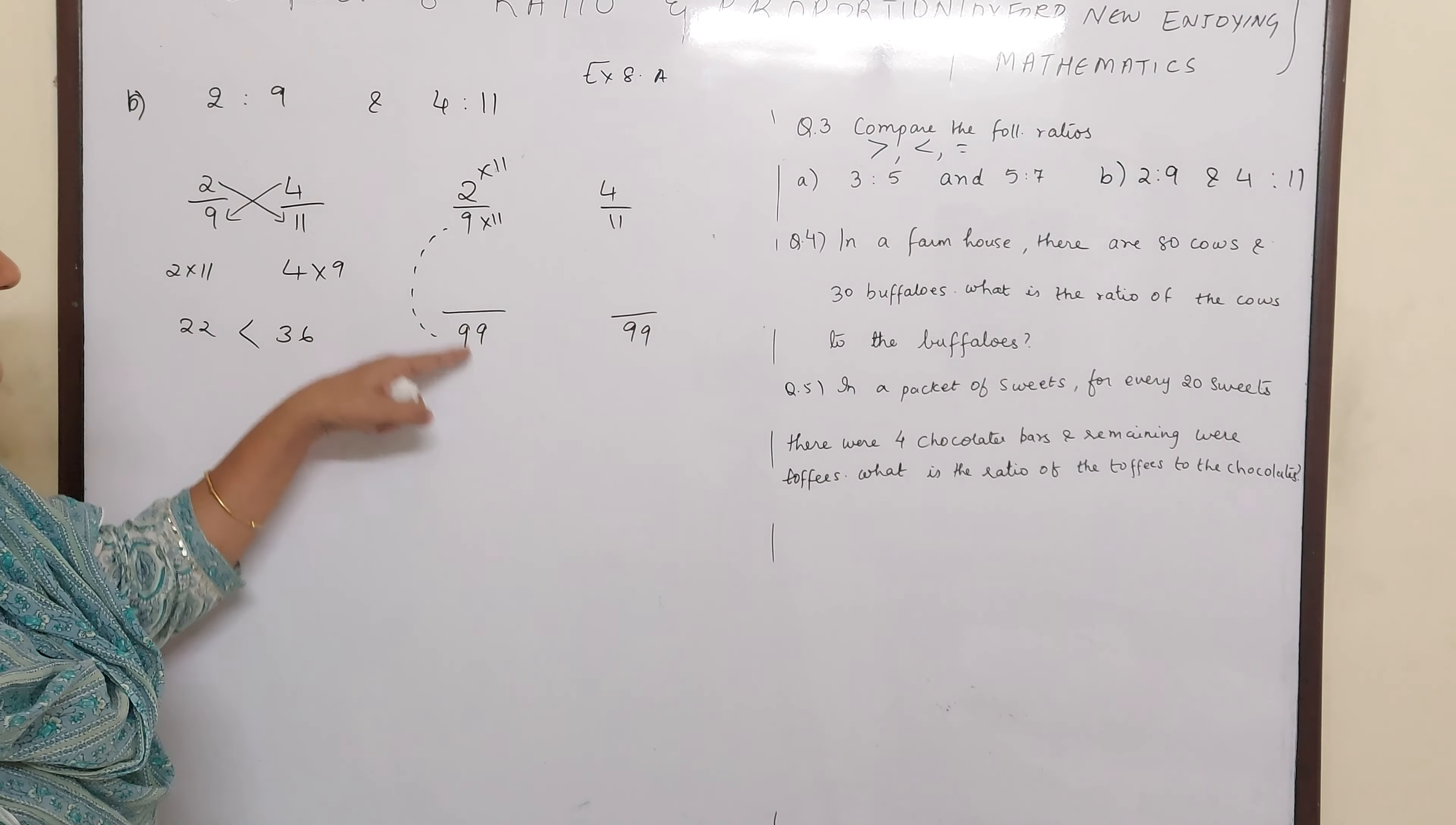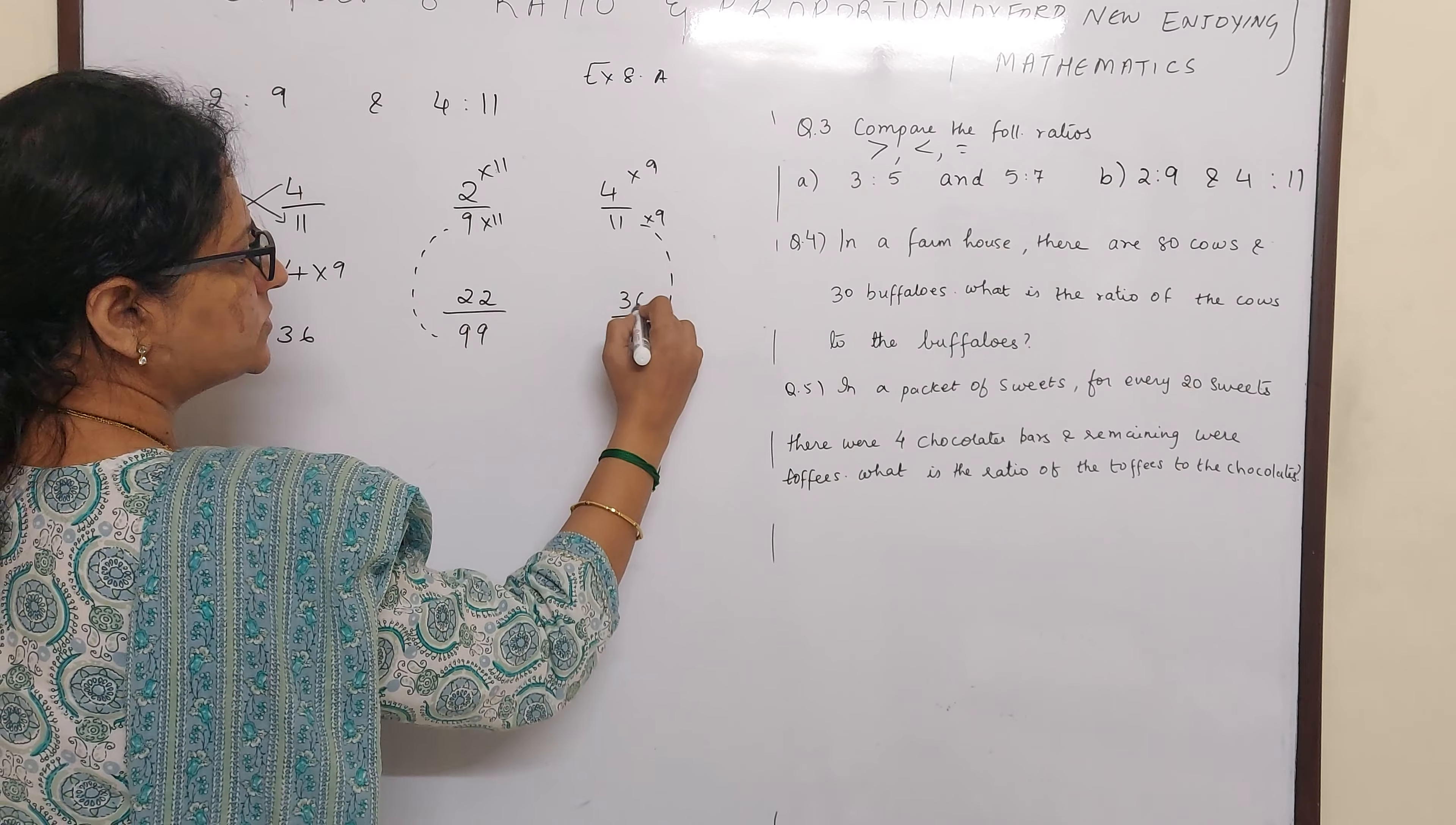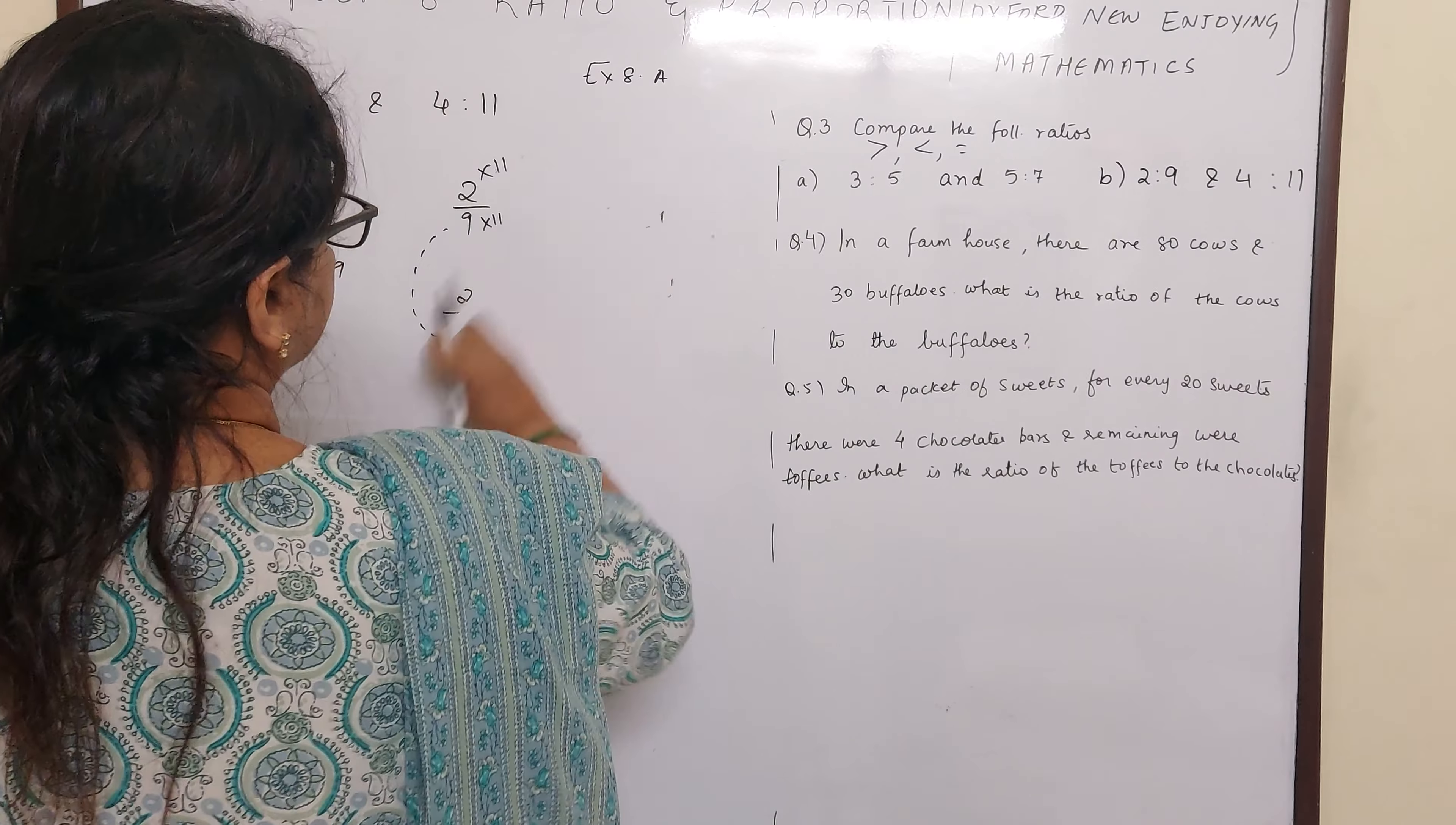Some children only do this and then write 2, I have seen many students. So 9 elevens are 99. Multiply by 11 the numerator also. Then only it will be an equivalent fraction. 11 nines are 99. 4 nines are 36. Now you see the fractions have become same. The denominator has become same. So if you hide that denominator, which side is bigger children? That's it. So just write the same. So you can go for cross multiplication method or like fractions method. Try to solve sums on your own for your practice.